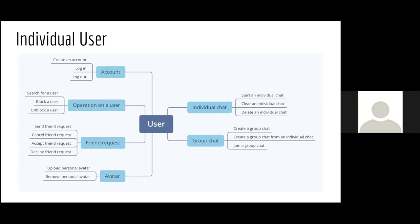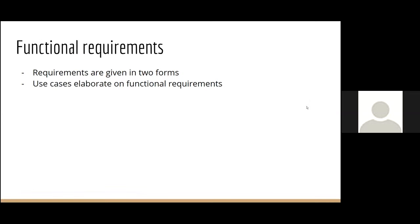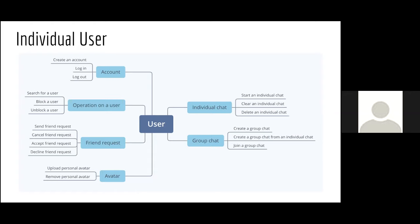All users have a personal avatar. By default we decided they should have a randomly generated generic avatar, but they can upload their own image and remove it to revert to the default. For the more important part of the application, we have two types of chat channels — individual and group chats. Individual chats are one-to-one, direct chats between two friends.